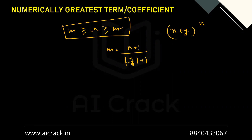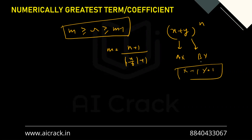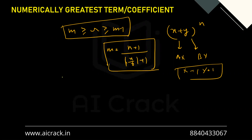Note that x and y here can represent terms like Ax and By respectively. If we want to find the numerically greatest coefficient rather than the greatest term, we put x = 1 and y = 1, which removes the variable part. So we use the same expression for both cases — remember the condition M-1 ≤ R ≤ M and the value of M.